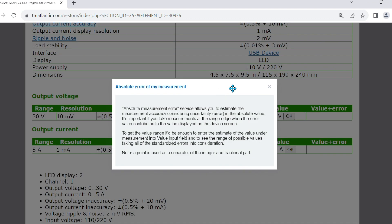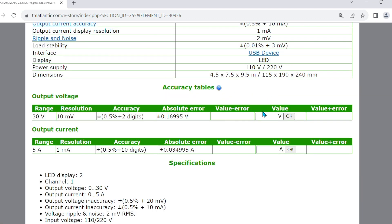For this purpose, our website has a special service for generating values, taking into account the accuracy of the power supply. We enter the value of 5V and see that, taking into account the accuracy, values from 4.955V to 5.045V are possible.